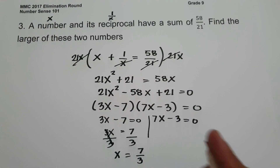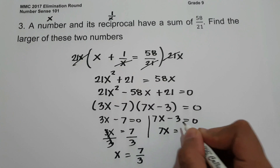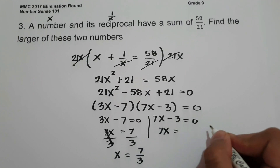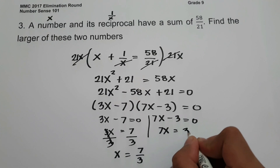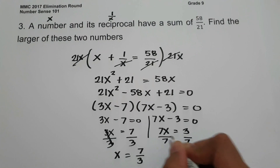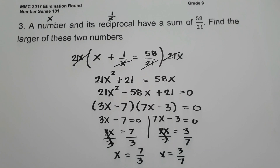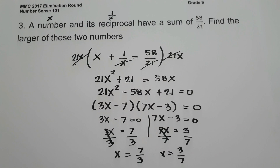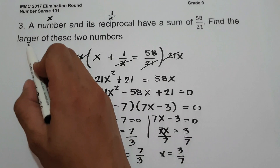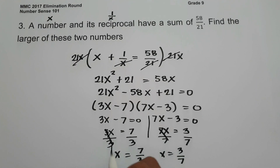For the other factor, 7x equals 3, divided by 7 gives x equals 3 over 7. Since we are looking for the larger number, the larger number is 7 over 3, and this will be the answer.